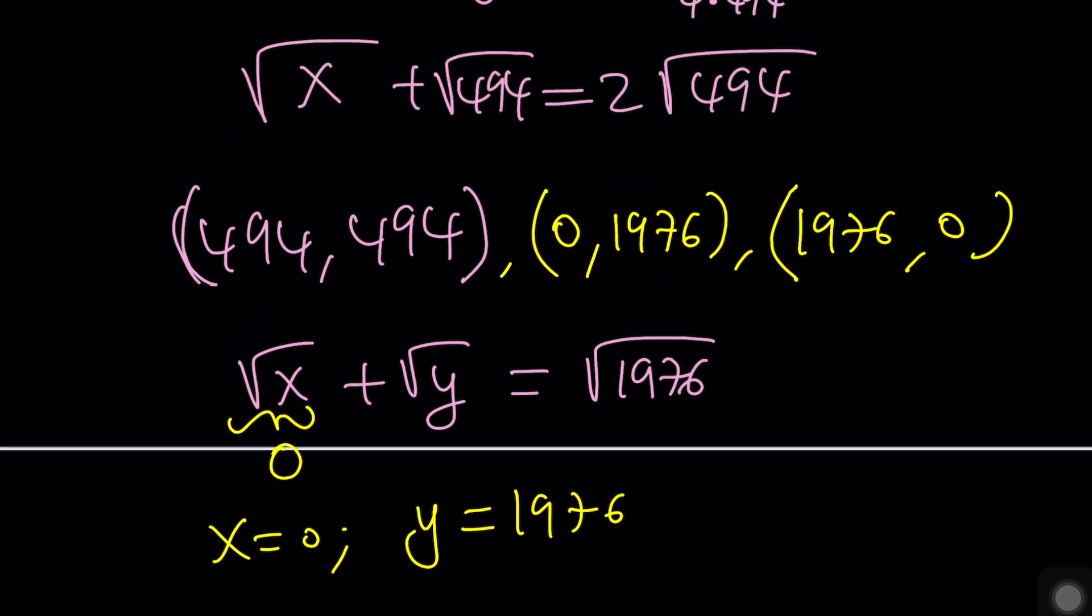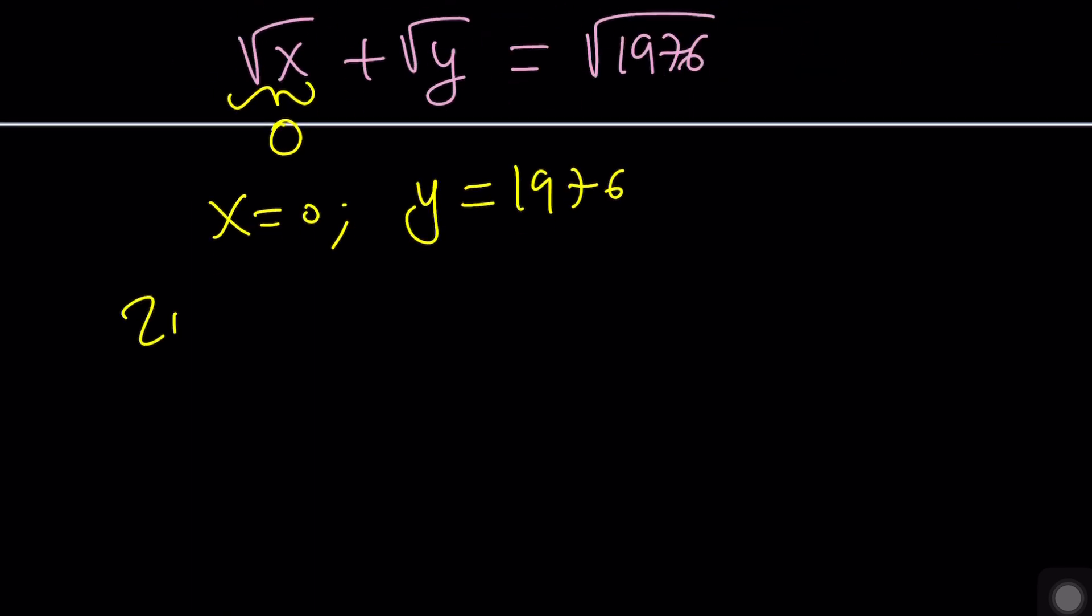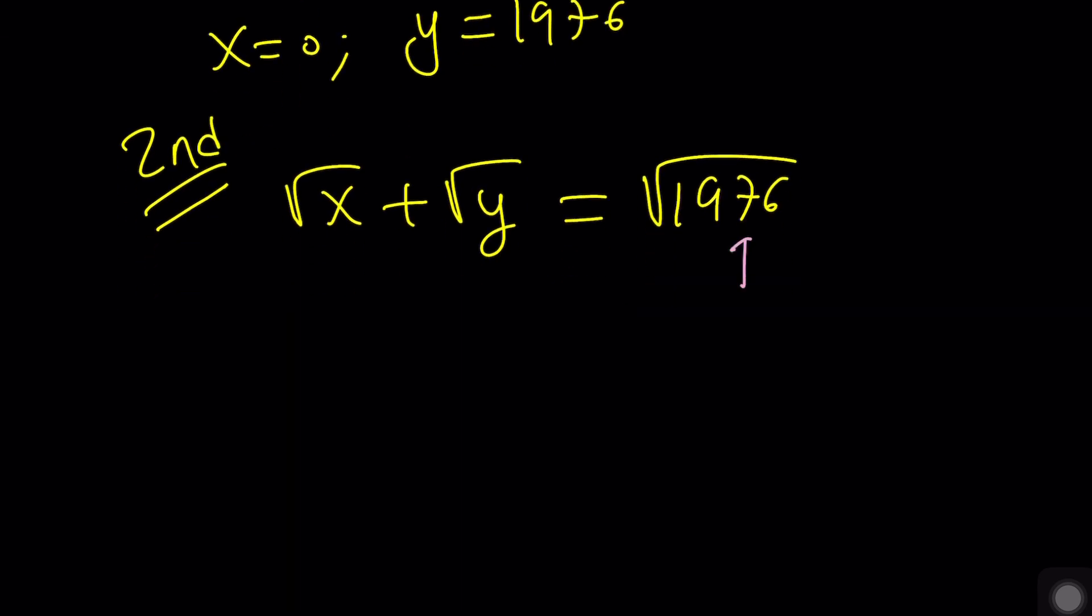I kind of maybe mentioned it subtly a little bit. I don't know if you noticed, but when we did the factorization on this one, remember we wrote it as two times square root of 494. Well, two times the square root of 494 can be written as the square root of 494 plus the same thing.